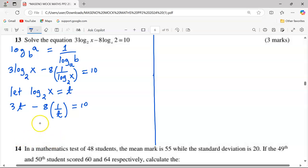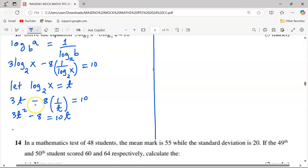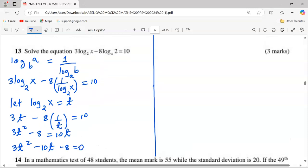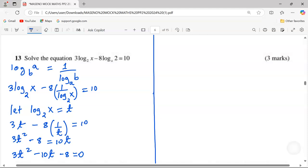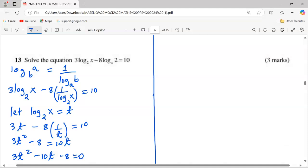We can cross multiply through by t so that this is 3t² - 8 = 10t. We can rearrange the equation so that it takes a quadratic shape and this will give us 3t² - 10t - 8 = 0. It's now quadratic and we can solve it quadratically.